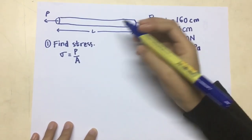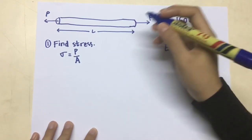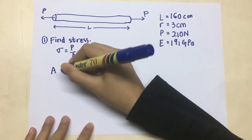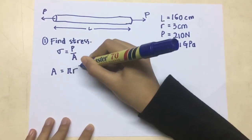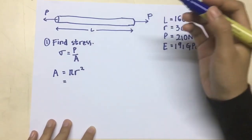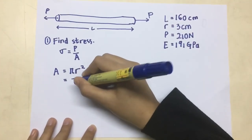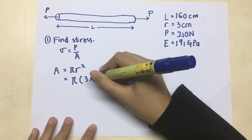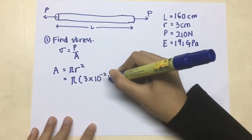For your information, rho indicates the stress, P indicates the engine loading or the force of the object, and A is the area of the object. Here, we use pi R square indicates the area of a circle.